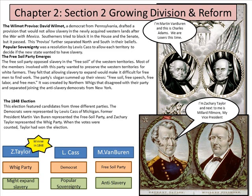We're getting closer to that war. The Wilmot Proviso: David Wilmot, a Democrat from Pennsylvania, drafted a provision that would not allow slavery in the newly acquired Western lands after the war with Mexico. Many Southerners tried to block it in the House and the Senate, but it passed.